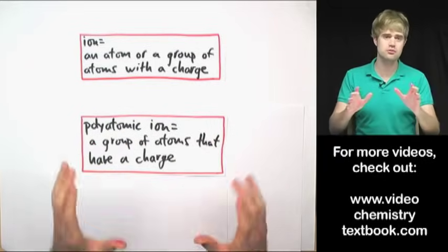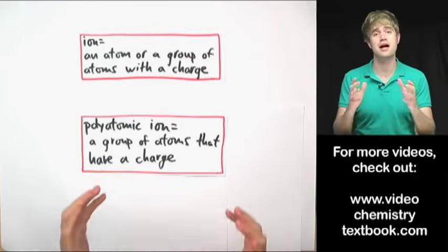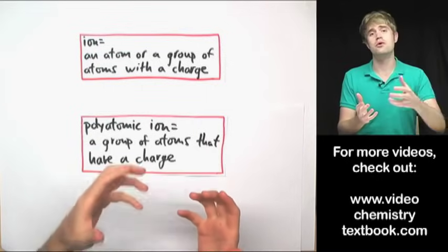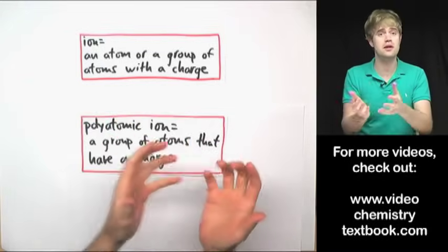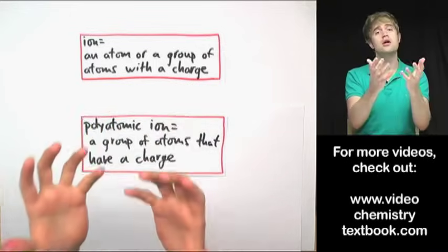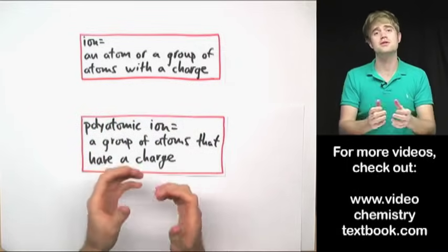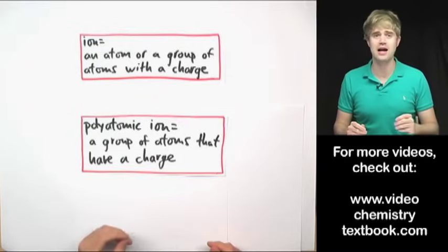Anyway, just to review what we've learned. We learned that an ion is an atom or a group of atoms that have a charge. And something gets a charge when the number of protons and electrons don't balance out. You have more protons than electrons, you'll have an ion with a positive charge, you call it a cation. You have more electrons than protons, you have an ion with a negative charge and you call that an anion.